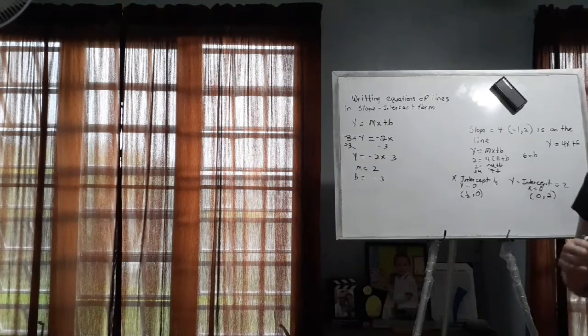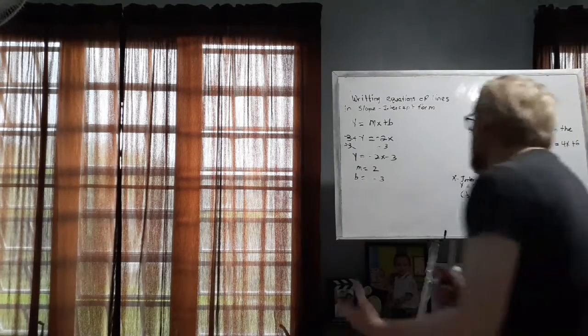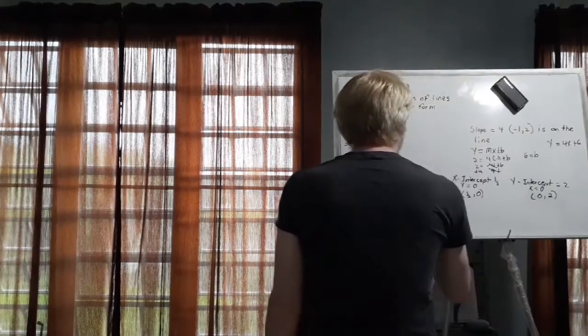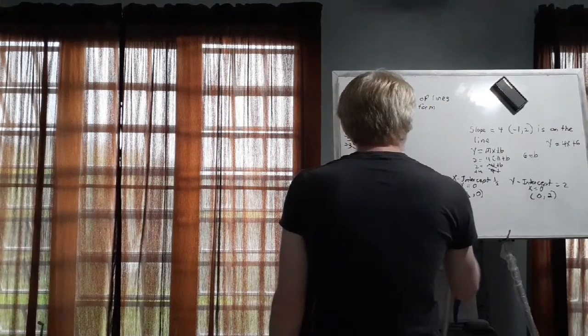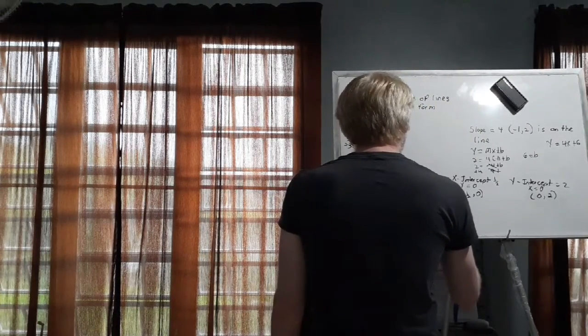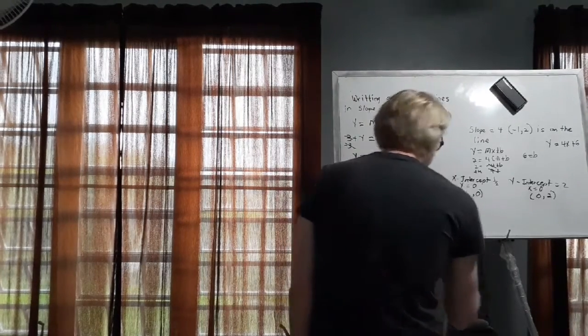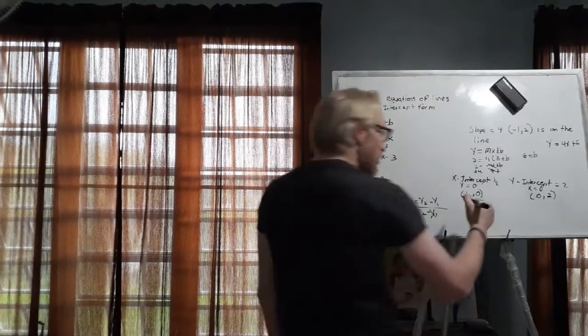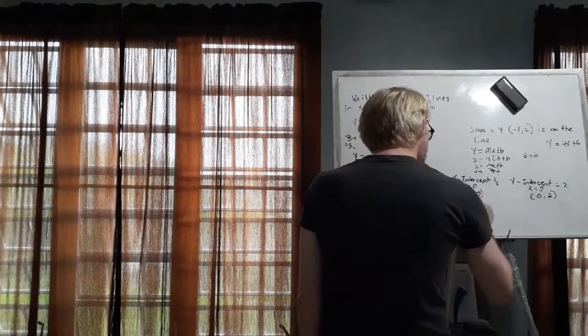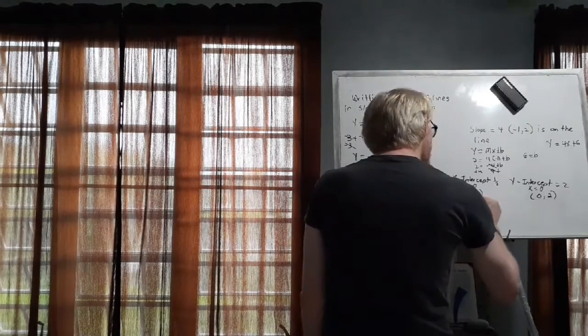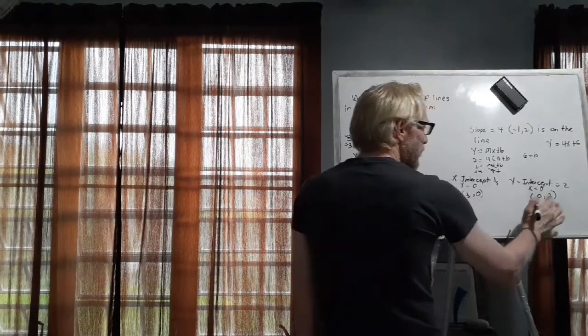Now what we are going to do now is calculate our slope using the formula m equals y sub 2 minus y sub 1 over x sub 2 minus x sub 1. So we are just going to say, well, m equals, this is x sub 1, this is y sub 1, this is x sub 2, this is y sub 2. So y sub 2, which is 2, minus y sub 1, which is 0.